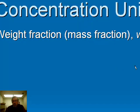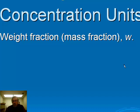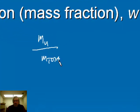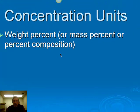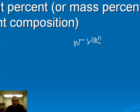Another way to describe concentration is the weight fraction, or mass fraction — the ratio of the mass of solute to the total mass of the solution (all solutes plus solvent), abbreviated by small w. Weight percent, also called percent composition or mass percent, is just the weight fraction expressed as a percent: w times 100. This is commonly used to describe solutions sold commercially — for example, sulfuric acid is sold by what percent of the solution is H₂SO₄, with the rest being water.